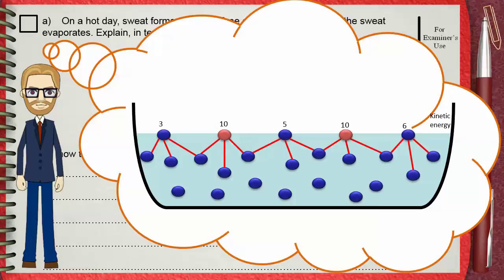In our case are those molecules which are represented by red color. However, because these molecules have high kinetic energy, they can break the bonds with other molecules and become free and escape from the surface. Now what happened? The highly energetic molecules escaped,